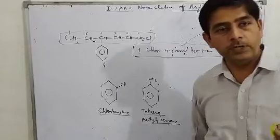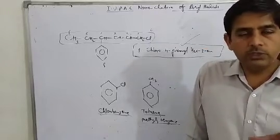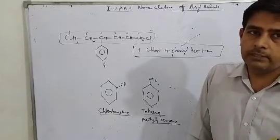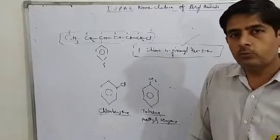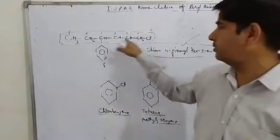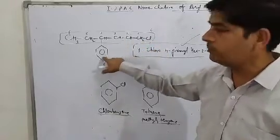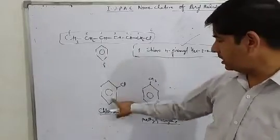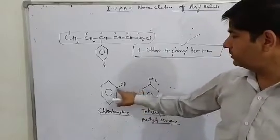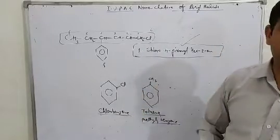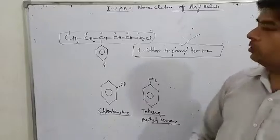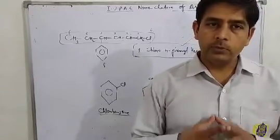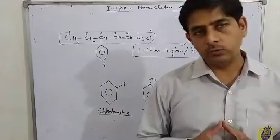So here you can use 'phenyl'. If the functional group is on benzene itself, consider it benzene because the main cyclic chain is benzene. But if benzene has no functional group and is attached to a hydrocarbon chain that carries the functional group, use 'phenyl'. I think IUPAC nomenclature of aromatic compounds is now clear. In the description box you will find a worksheet to practice.